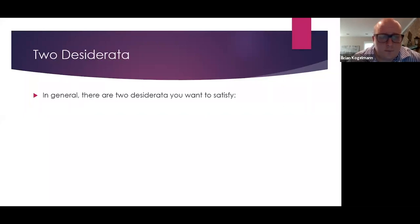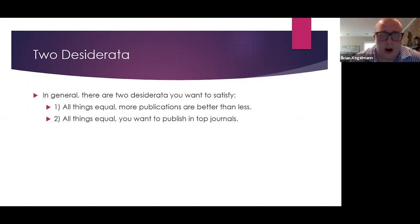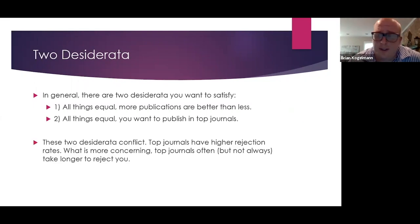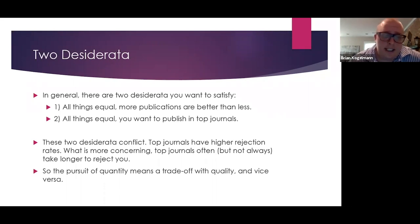In general, there are two desiderata you want to satisfy when publishing. All things equal, more publications are better than fewer. Also all things equal, you want to publish in top journals. These two desiderata conflict with one another. Top journals obviously have higher rejection rates — that's what makes them top journals. What's more concerning: top journals can often take longer to reject you. I've noticed that when I send my stuff to tier-one places and they reject it, those take a lot longer to get back to me than lower-ranked places. So the pursuit of quantity means a trade-off with quality and vice versa.